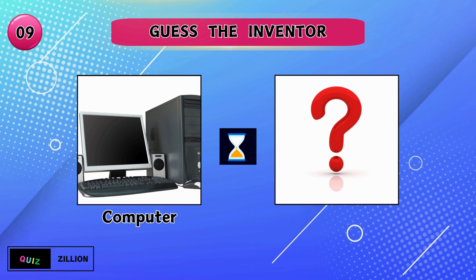Who founded the camera? George Eastman discovered the camera. Who innovated the refrigerator? Jacob Perkins found the refrigerator.